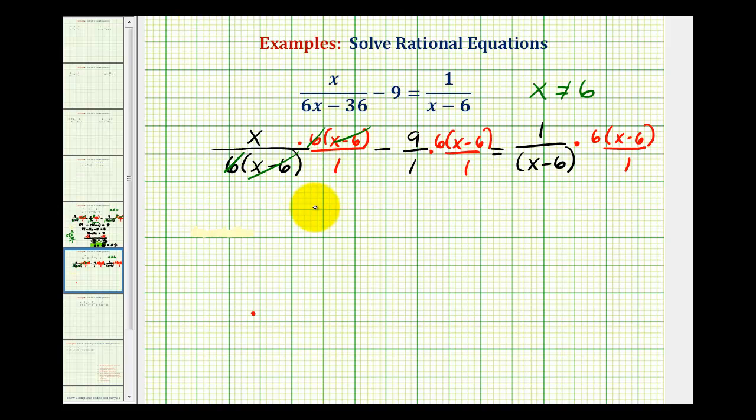So now we just have x minus. Nothing simplifies on this product, but that's okay because our denominator is already one. So we have nine times six times the quantity x minus six equals,